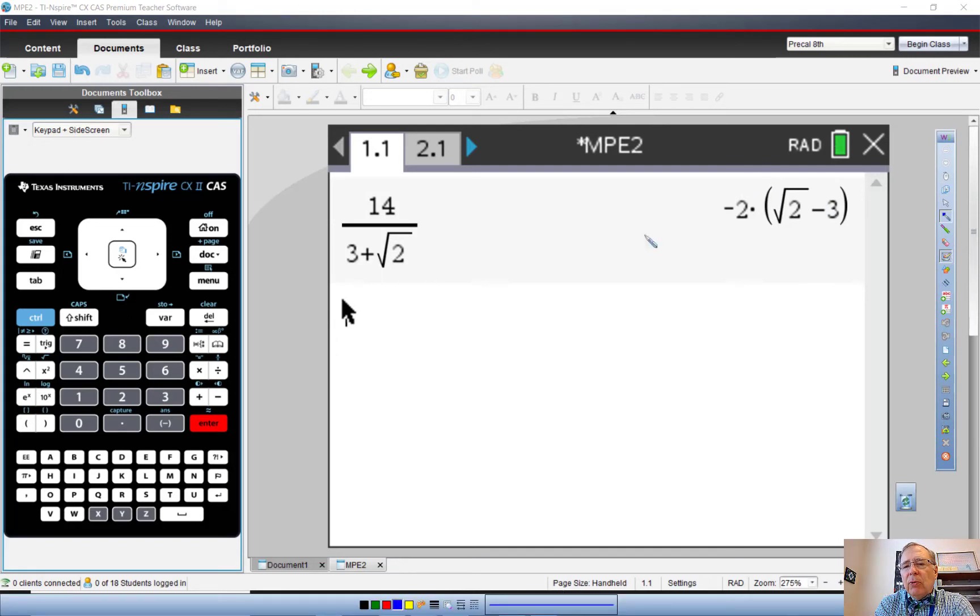They have some bizarre rule. But if we distribute the negative two back in, negative two times negative three is six. And negative two times positive square root of two is minus two square roots of two. So we got the same thing there.